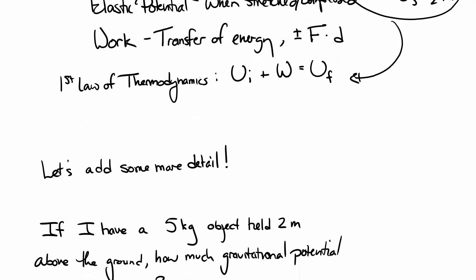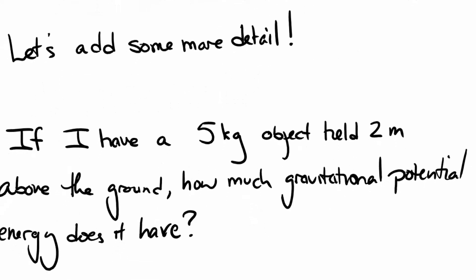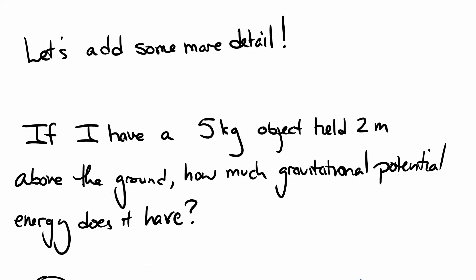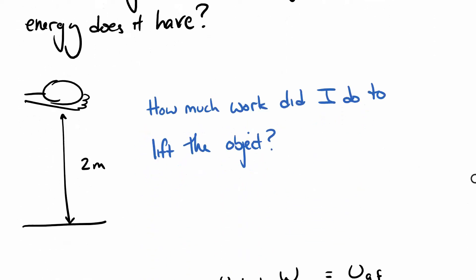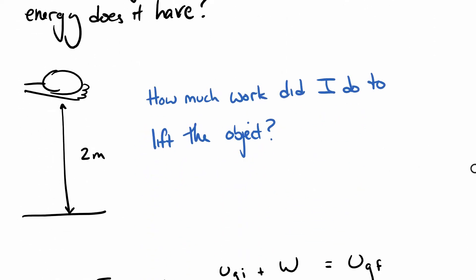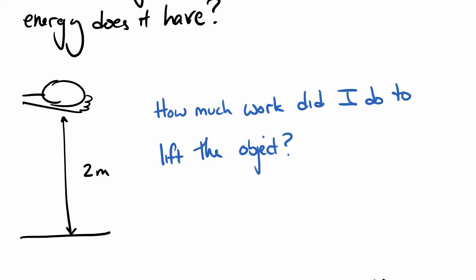Now let's add some detail here. Say, if I have a five kilogram object held two meters above the ground, how much gravitational potential energy does it have? Well, we could just go use that equation we had talked about a second ago, but let's try to figure out how we got it. So if I lift this thing two meters at a negligible and constant speed, negligible and constant so we can ignore any energy that went into the motion of it so that we're not doing any work to speed it up.